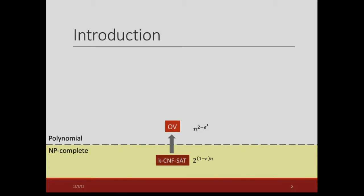Here is the graph of the reductions. From the NP-complete world, we have the k-SAT problem, and in the polynomial time world, we have orthogonal vectors. There is a reduction from k-SAT to OV saying that if the latter has a subquadratic time algorithm, then k-SAT can be solved faster than two to the n.